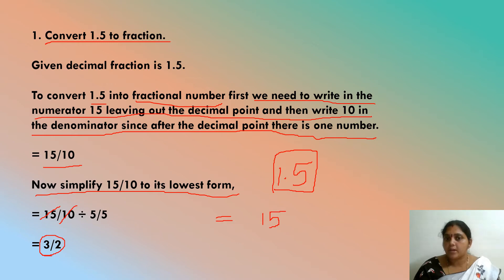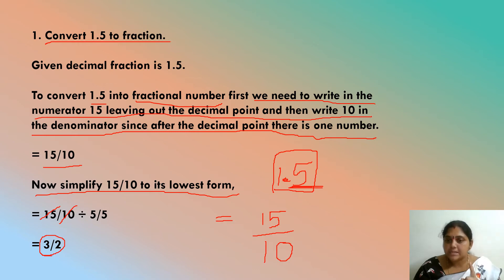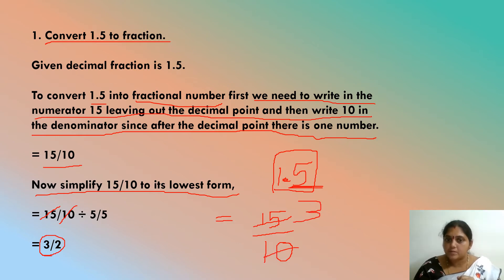Write 1 in the denominator and count how many digits are after the decimal point. There is only 1 digit, so write a single 0 in the denominator, giving 15/10. Now divide both by 5: 5 times 3 is 15, 5 times 2 is 10. Our lowest fraction is 3/2.